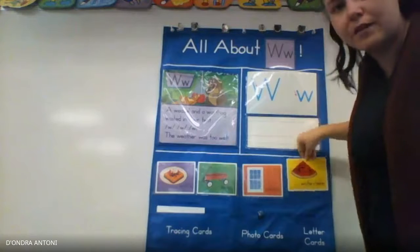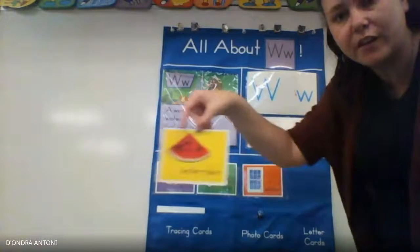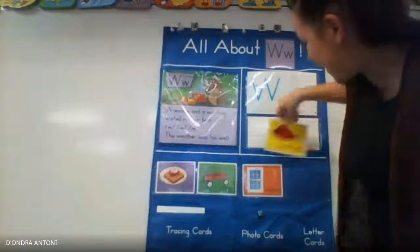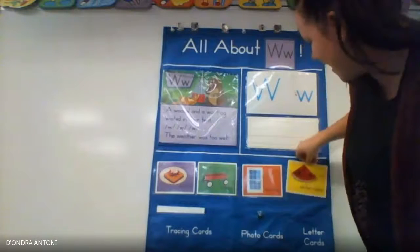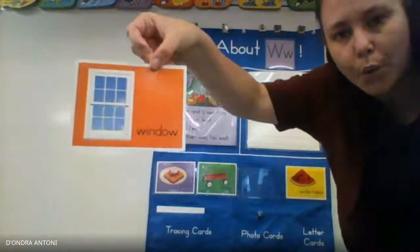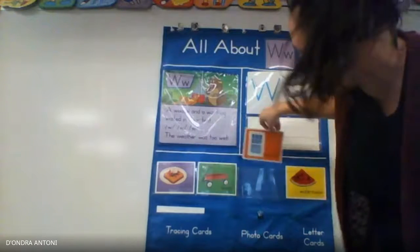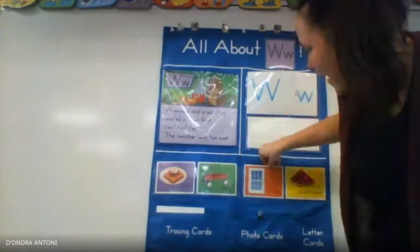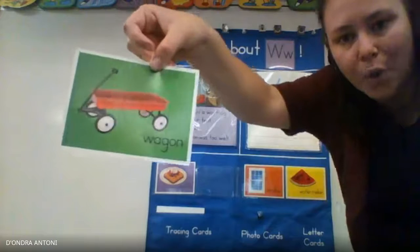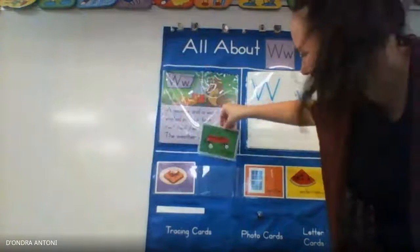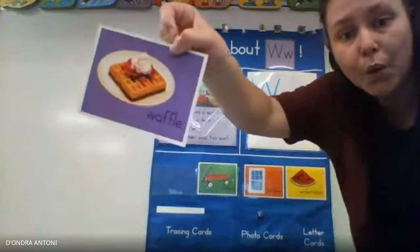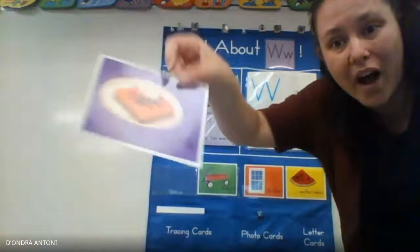Now let's see what our W words are. A W-W watermelon. And a W-W window. And a W-W wagon. And a W-W waffle.